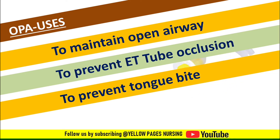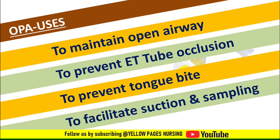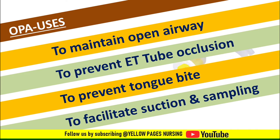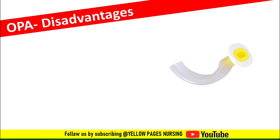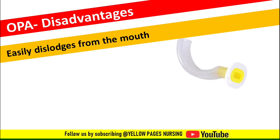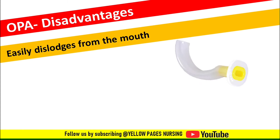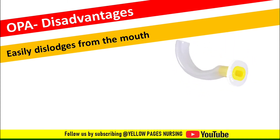Additional uses include: to prevent tongue bite, and to facilitate suction and sampling. The disadvantages of oropharyngeal airway include: the OPA gets easily dislodged from the mouth if it is not secured properly.